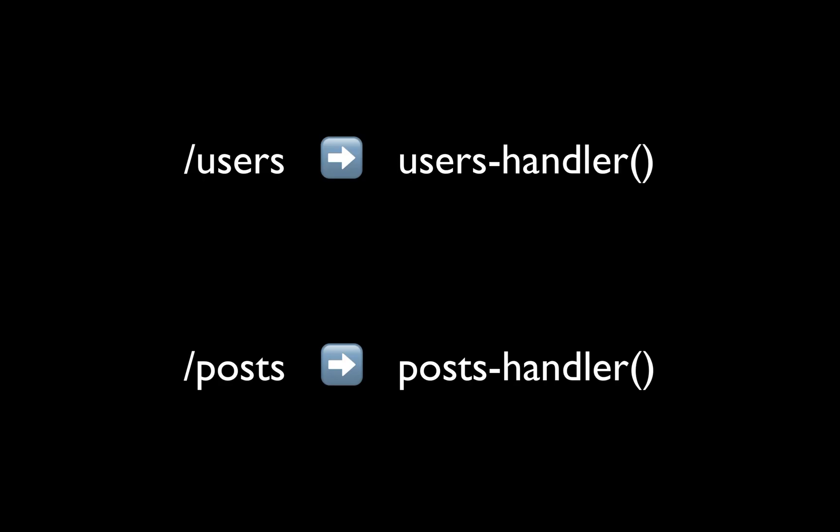Here is an example. We have a users URI and also a posts URI. We want to handle a request to a users endpoint differently than we do a posts endpoint, so we forward them to different handlers.